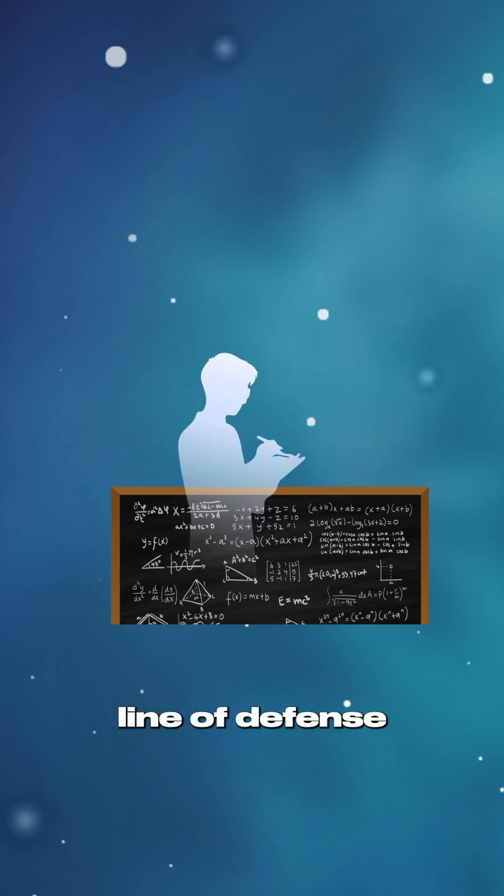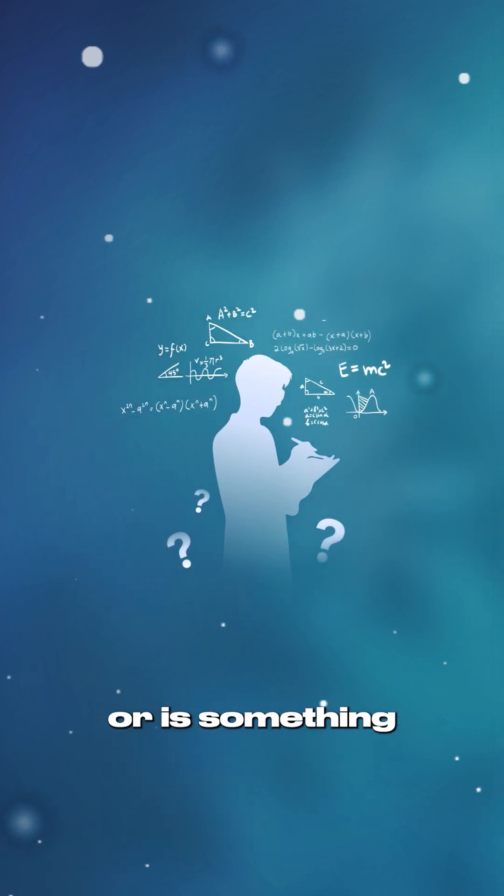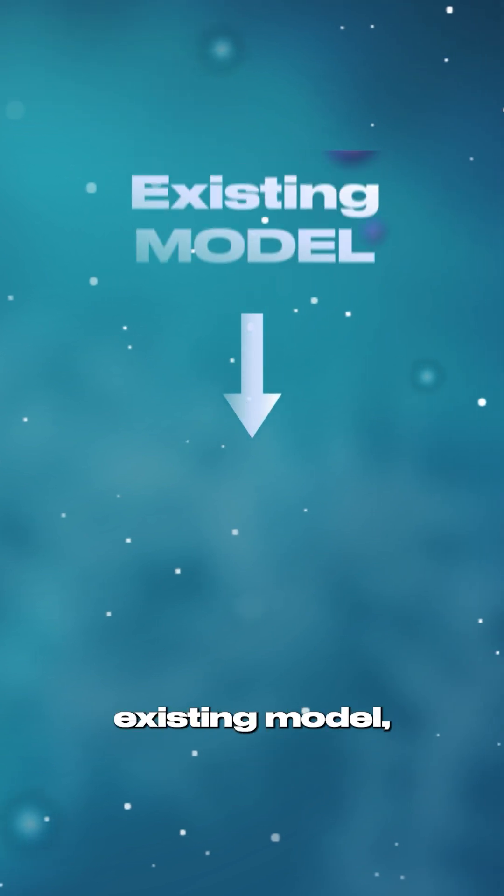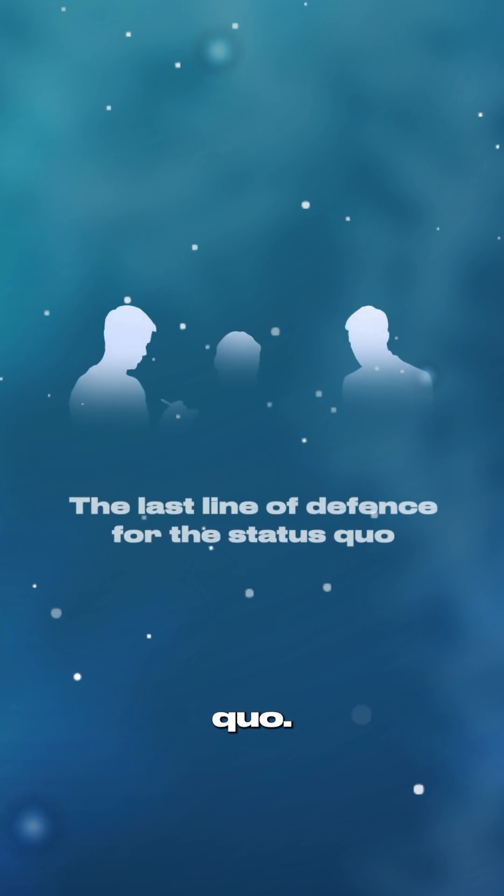Math is the last line of defense for a failed model. If something disproves the model or is something that is inconsistent with the existing model, they turn to mathematicians and have mathematicians calculate what needs to happen so mathematically it fits in with the status quo.